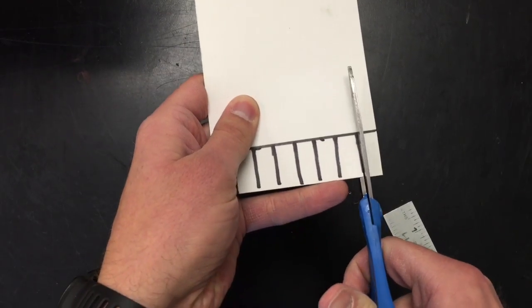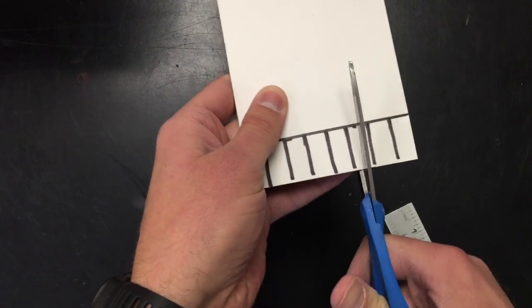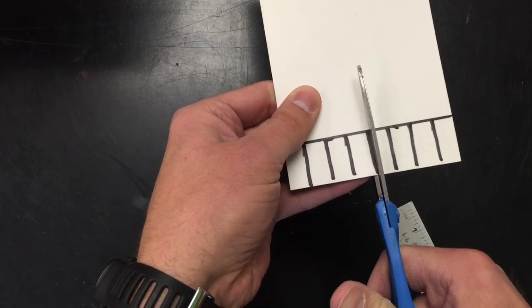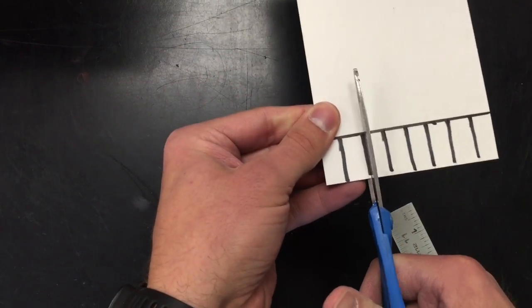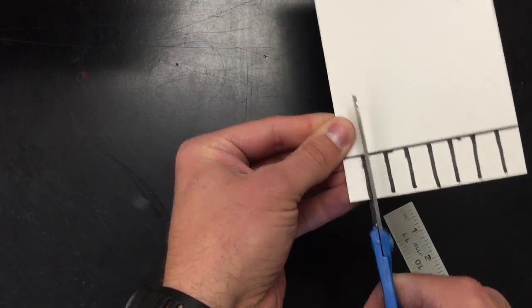Once we have the lines drawn, we can cut just those little slits all the way down to the horizontal line. This will allow us to thread the yarn through these slits in the cardstock.